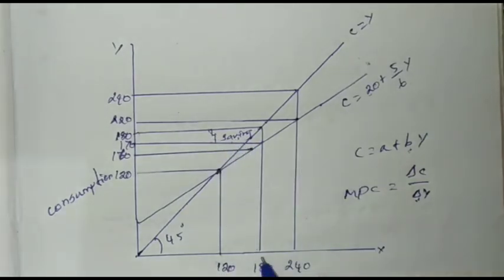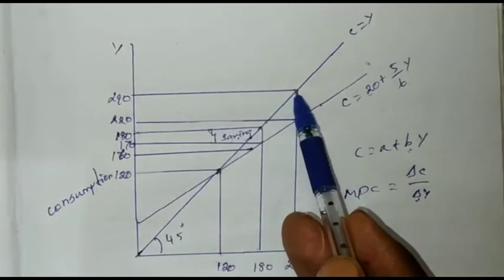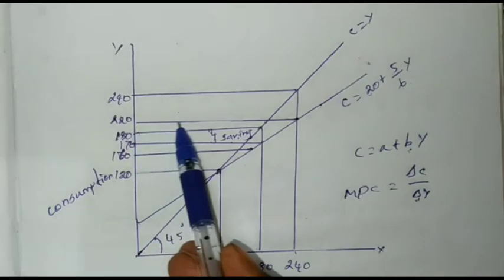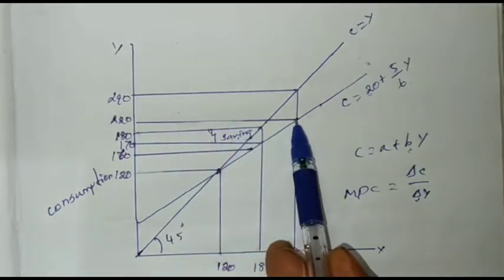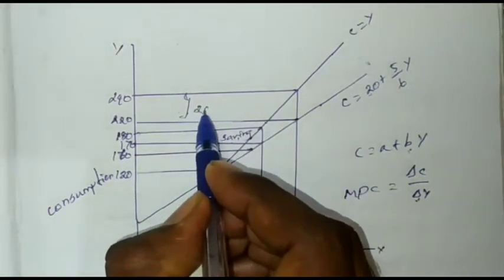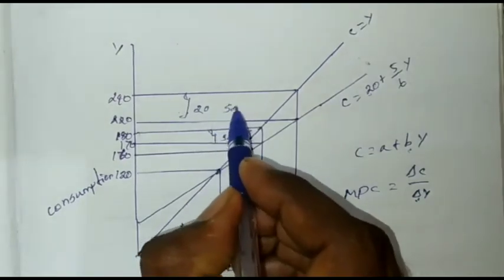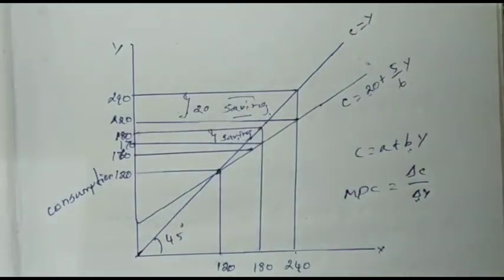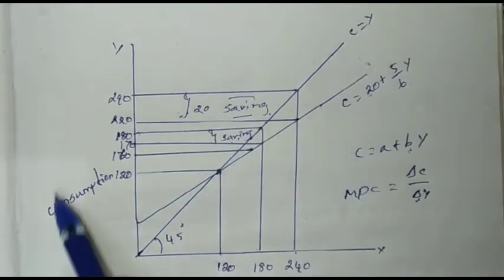When income increases from 180 to 240, you can see savings appearing in the diagram. The consumption line lies below the C equals Y line, showing savings. The diagram is simple — the gap between the C equals Y line and the consumption line represents savings.